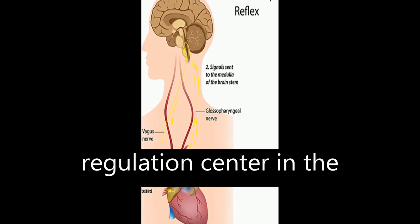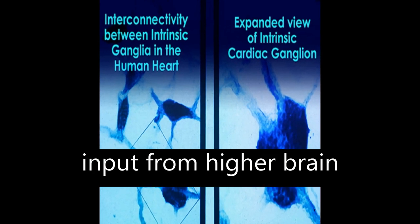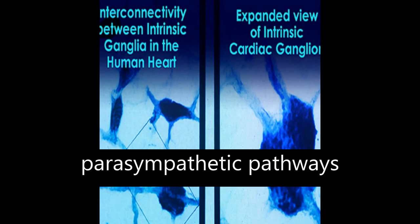The cardiovascular regulation center in the medulla integrates sensory information and input from higher brain centers to adjust heart rate and blood pressure via sympathetic and parasympathetic pathways.